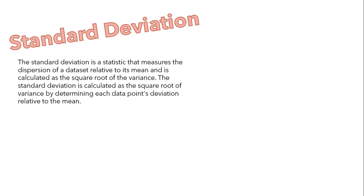A decision tree is built top-down from a root node and involves partitioning the data into subsets that contain instances with similar values. We use standard deviation to calculate the homogeneity of a numerical sample. If a numerical sample is completely homogenous, its standard deviation will be 0.